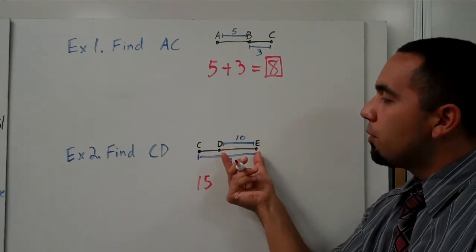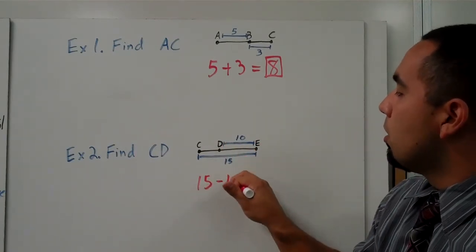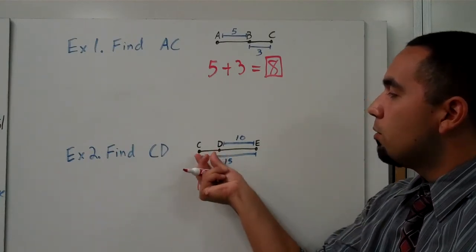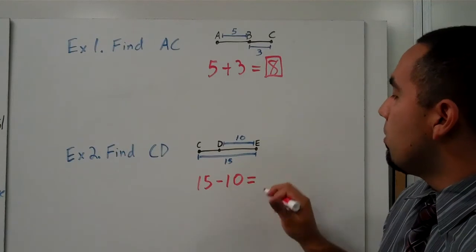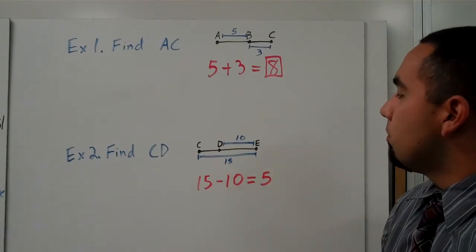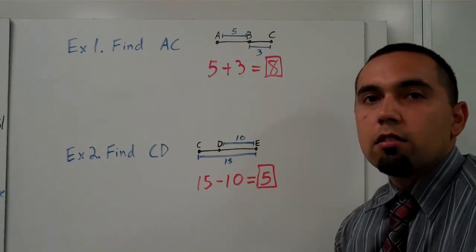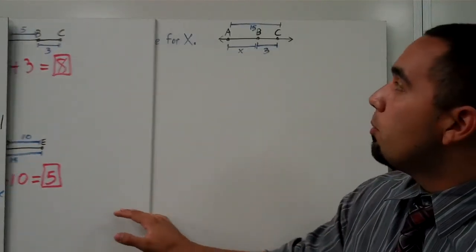And we know that the piece that we don't want to find is 10. So what I'm going to do is I'm going to subtract the 10. So 15 minus 10 will give me that little piece left over, right? So 15 minus 10, I get 5. So I know that CD, its length is 5.